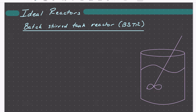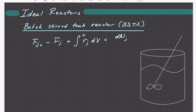Typically we know the concentration of all our species at time equals zero, so once we start the reaction. Our starting point for all these reactors is the general mole balance seen previously. For some species J, we can write that the molar flow rate of J in minus the molar flow rate of J out plus the generation of J within the reactor volume is equal to the accumulation of J with time.